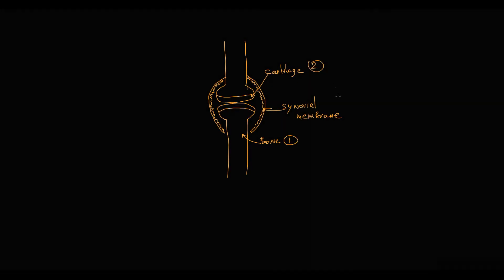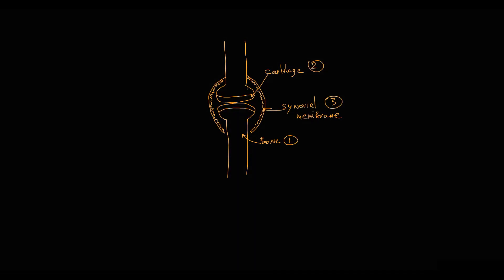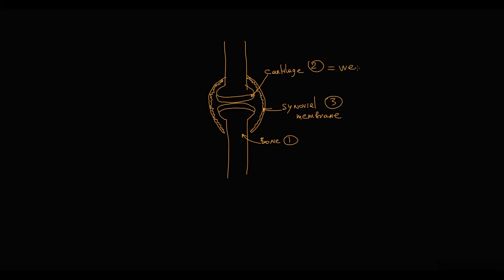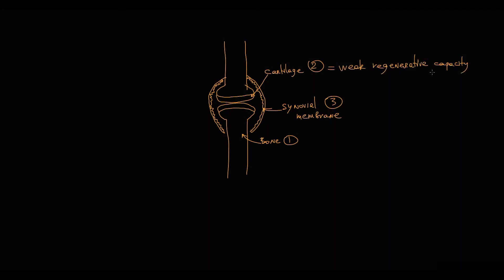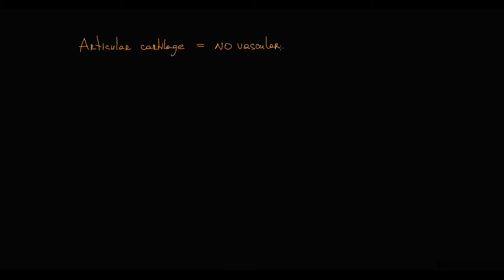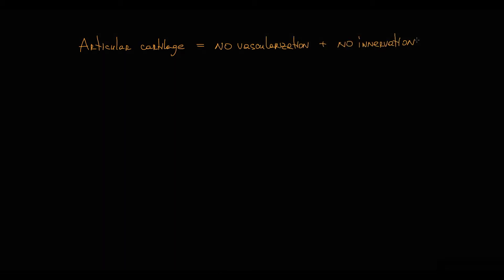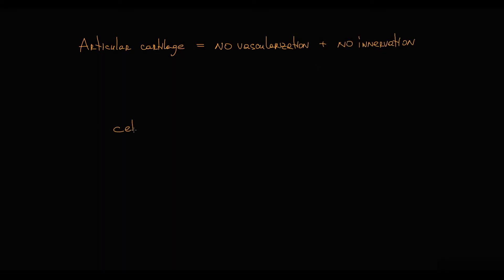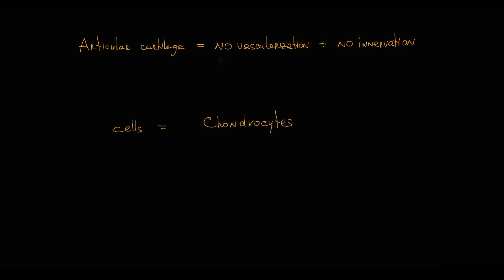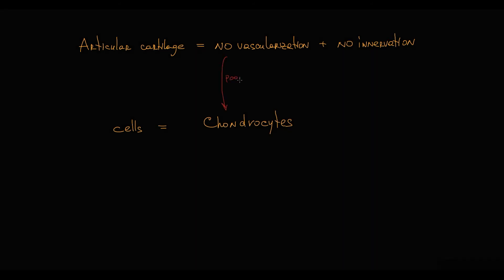What is important to understand is that cartilage has very weak regenerative capacity, because unlike other tissues, articular cartilage has no vascularization and no innervation. The only cells present in cartilage are chondrocytes. Because chondrocytes don't have proper vascularization or innervation, they have very poor nutrient delivery and very low metabolism.